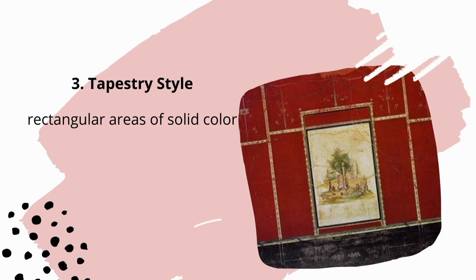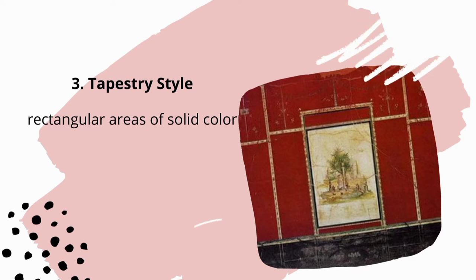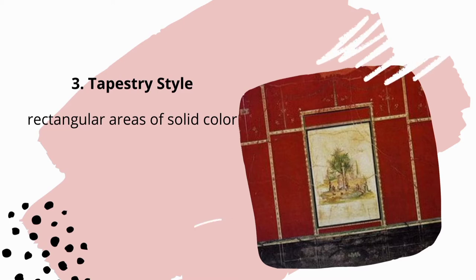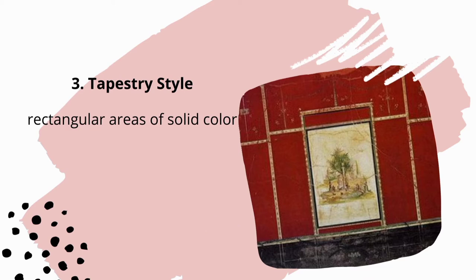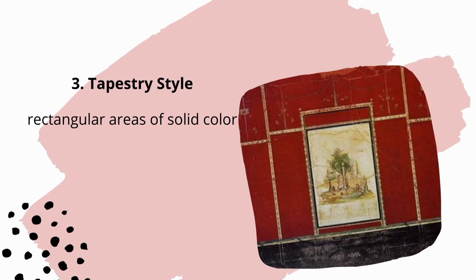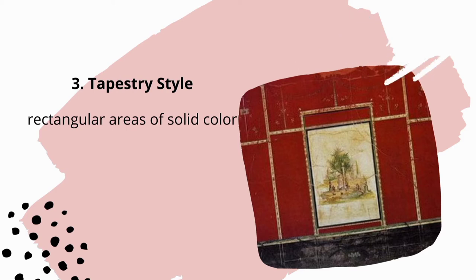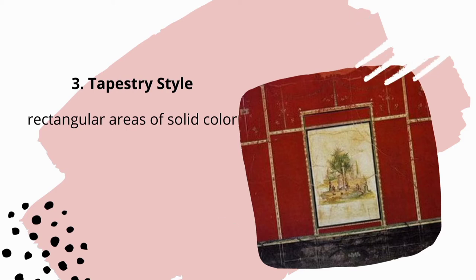The third style, dubbed the tapestry style, uses rectangular areas of solid color as the dominant visual effect. Each rectangle is sparsely covered with fine decorative elements, yielding the overall impression of a wall covered in large, lightly embroidered tapestries. Sometimes a realistic scene is embedded among the tapestries as though it were a framed painting hanging on the wall.